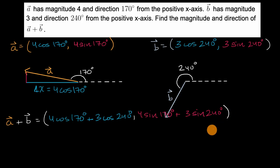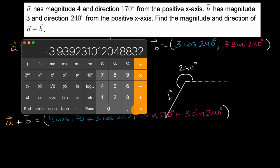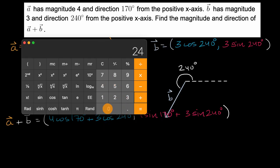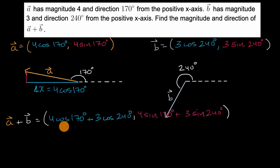Using a calculator: cosine of 170 degrees times four, plus cosine of 240 degrees times three, gives us approximately negative 5.44. So the x component is approximately negative 5.44.